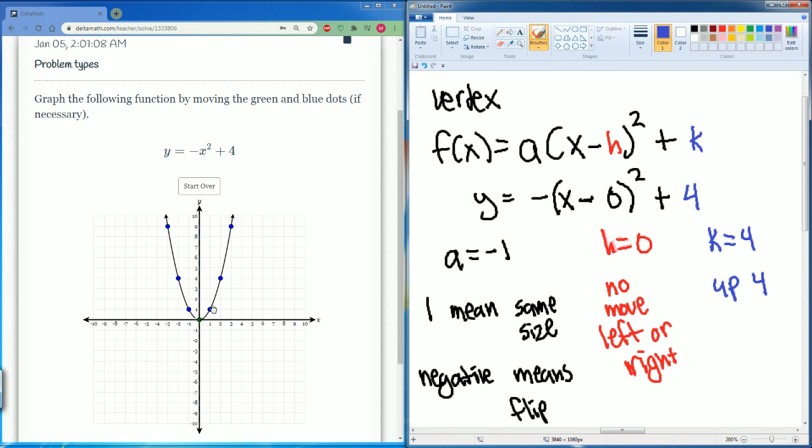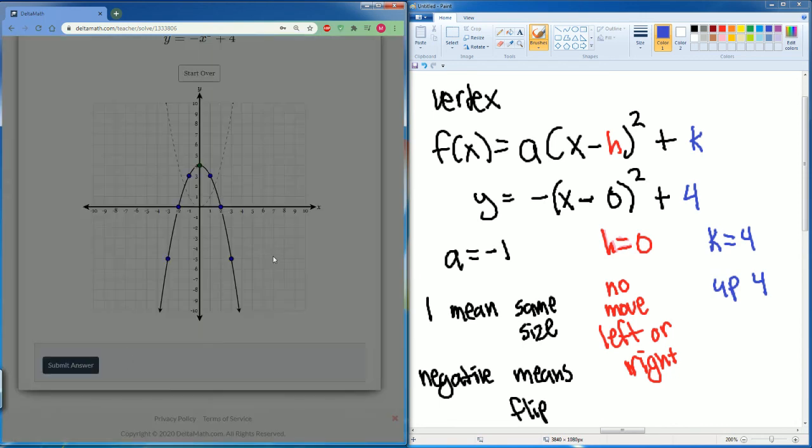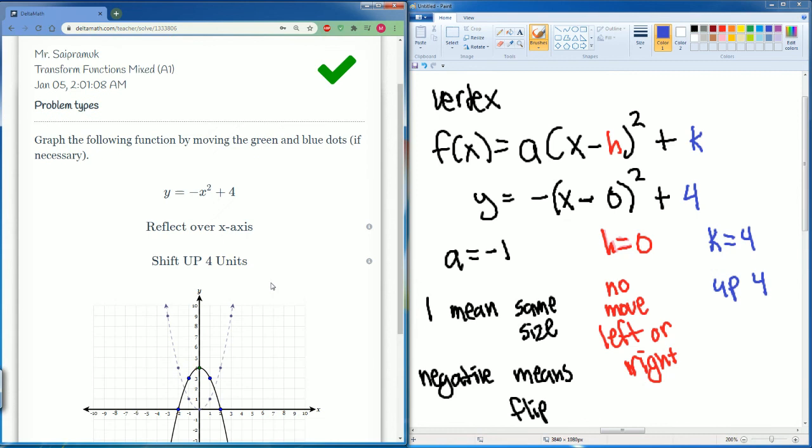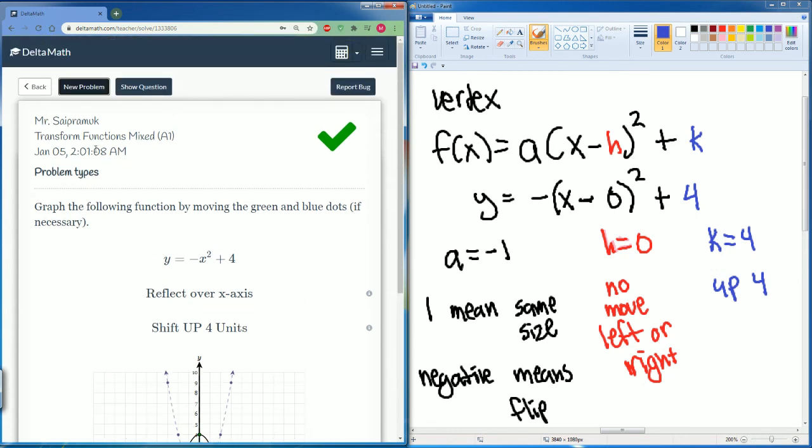So same size. The negative means we flip it. So it goes from (1, 1) to (1, negative 1). Do you see how we flipped it? Then we do not move it left to right. We just go up 4 based on the k equals to 4. So 1, 2, 3, 4. And then we submit the answer. There you go. That is how you do transformation of functions mix A1.